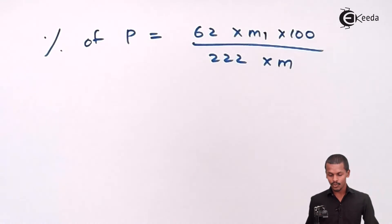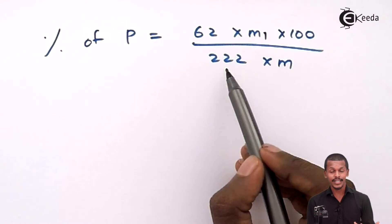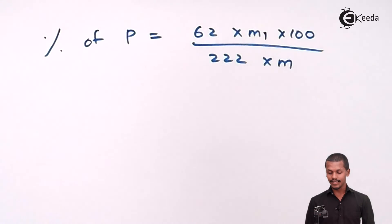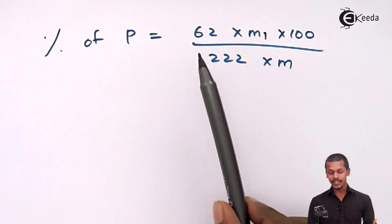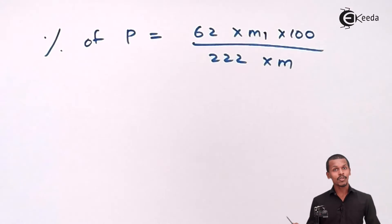Where M1 stands for - or we could say it this way - one mole of magnesium pyrophosphate weighs 222 grams and consists of 62 grams of phosphorus. This is the formula from which we can calculate.